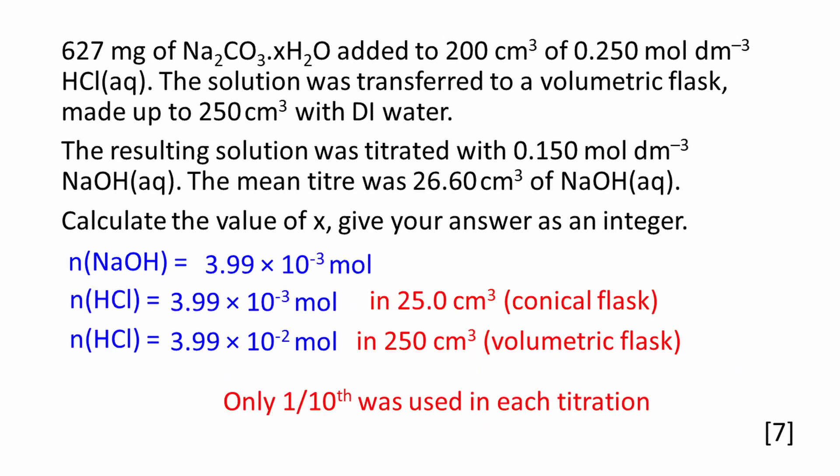25 cm³ of the hydrochloric acid was used in each titration, and the original solution of hydrochloric acid was 250 cm³. So the amount of hydrochloric acid present in the original 250 cm³ volumetric flask is equal to 3.99 × 10⁻² moles.